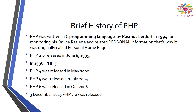There were many improvements after the development of this language in 1994. PHP 2 was released on June 8th, 1995. PHP 3 was released in 1998. PHP 4 was released in May 2000. PHP 5 was released in 2004. PHP 6 in October 2006. The latest version, PHP 7, was released on 3rd December 2015.